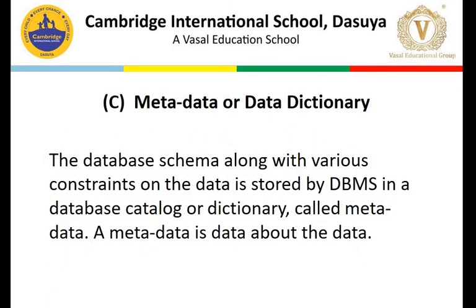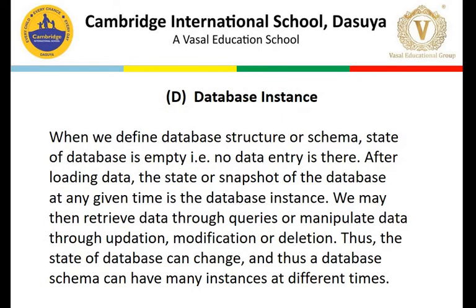Metadata is the data about data, also called the data dictionary. Then we discussed the database instance. A database is not a static thing. If you go to a bank at 9 o'clock, the state of your account is different. You make a transaction at 9:30 - your database is updated and it has a new instance. At 11:30 you make another transaction. So the database instance changes from time to time whenever certain changes or transactions take place.